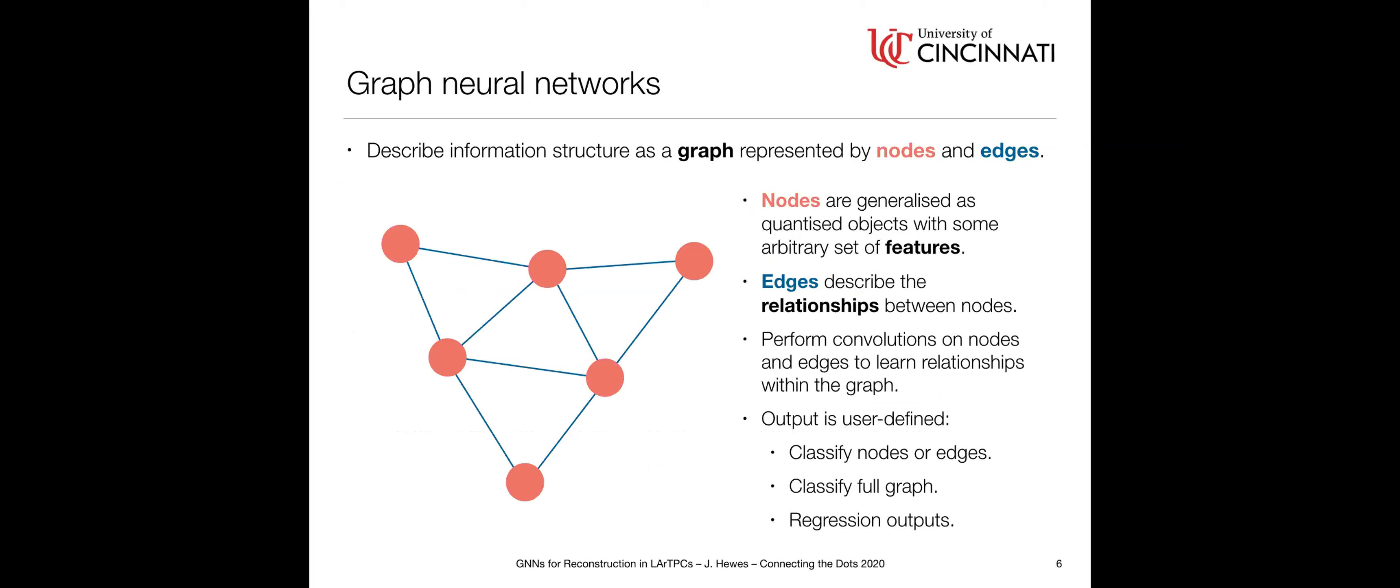To change gear and talk about graphs. At a fundamental level, the information structure of a graph is just nodes and edges. Nodes are generalized as some set of objects with an arbitrary set of features. These nodes can be homogeneous or heterogeneous. The edges describe the relationship between those nodes. The fundamental idea of a graph network is you're performing convolutions on those nodes and edges to learn something about the graph. You can do classification of your nodes, classification of your edges, or classifying the full graph or running regression on it. In the context of what I'm talking about today, I'm going to focus on node and edge classification.